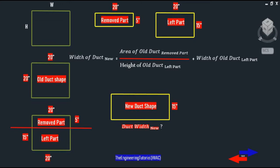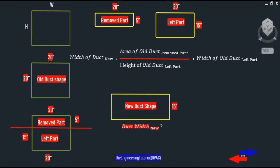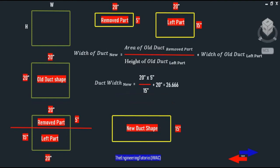First of all, we need to determine how many square inches of duct we want to remove from the existing shape. We have an existing duct of 20 by 20 inches. If we remove 5 inches from the height, then 5 times 20 equals 100 square inches to be removed. To find the width of the new duct shape, we use this formula: the width of new duct equals the area of the removed part divided by the height of the remaining part, plus the width of the old remaining part.